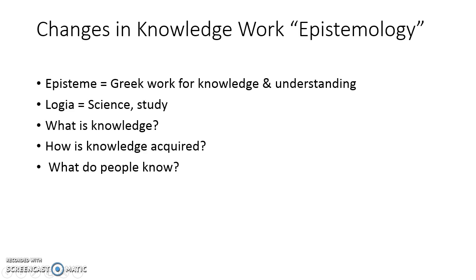Another big change is how we view knowledge and how knowledge works — this is called epistemology. It comes from the Greek word 'episteme,' meaning knowledge and understanding, and 'logia,' meaning science and study. There are three main questions: What is knowledge? How is knowledge acquired? And what do people know? These basic ideas drive a lot of work in the humanities, the social sciences, and the hard sciences through the 1900s and into our current era.